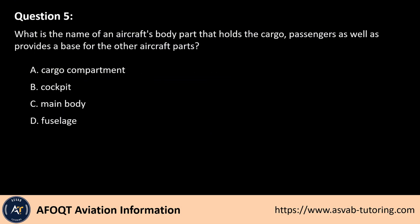Question 5. What is the name of an aircraft's body part that holds the cargo and passengers, as well as provides a base for the other aircraft parts? A. Cargo compartment. B. Cockpit. C. Main body. D. Fuselage.